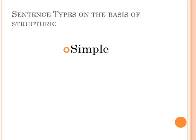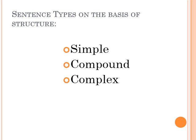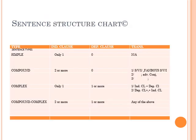On the basis of structure there are four types of sentences: simple sentence, compound sentence, complex sentence, and compound-complex sentence. A simple sentence has only one independent clause and no dependent clause. A compound sentence has two or more independent clauses and no dependent clause. A complex sentence has one independent clause and one or more dependent clauses. A compound-complex sentence has two or more independent clauses and one or more dependent clauses.